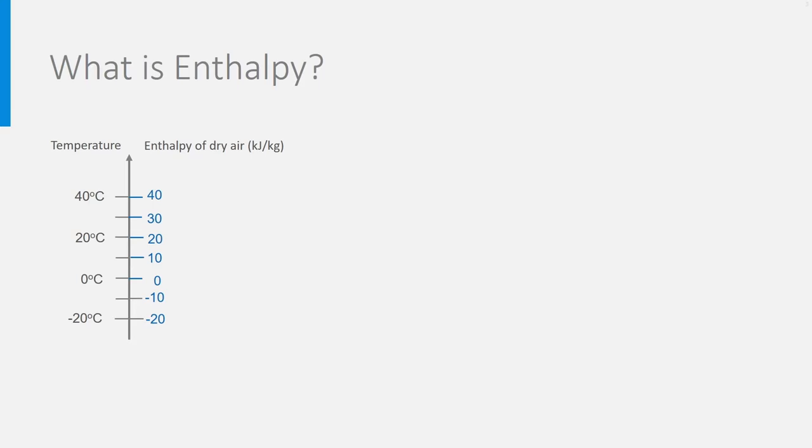See here the enthalpy of dry air in blue as a function of temperature. By definition, for a thermal system, the enthalpy at temperature T minus the enthalpy at zero degrees Celsius is C, the specific heat, times the temperature. Please note that C has the same value either in kilojoule per kilogram Kelvin or per degree Celsius. At zero degree, by definition, the enthalpy of air is zero. So, Ht equals Ct.